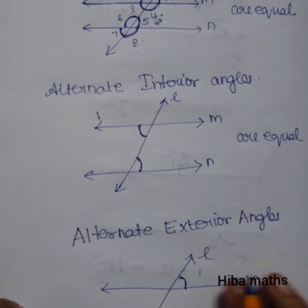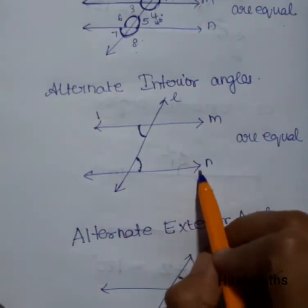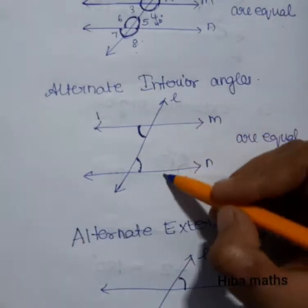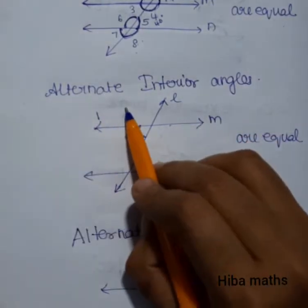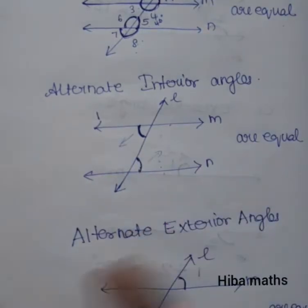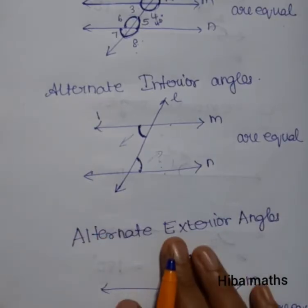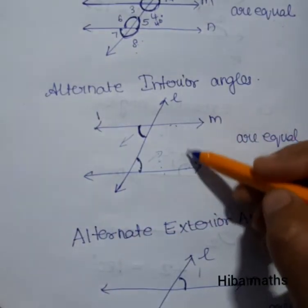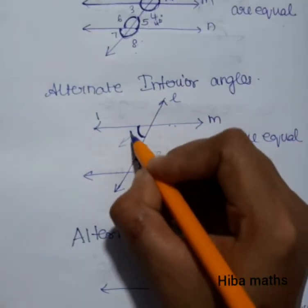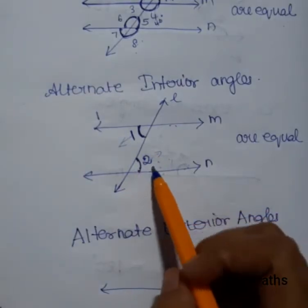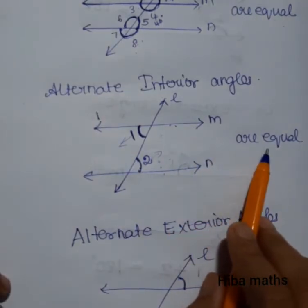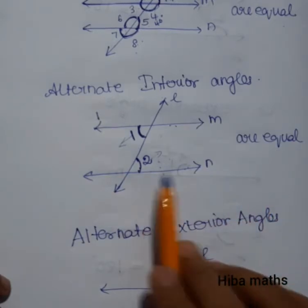Next, we will see alternate interior angles. We have two parallel lines crossed by a transversal. Interior means the inside, between the two parallel lines. Alternate means the opposite direction — one angle is on one side, the other is on the opposite side. Corresponding angles are on the same side, but alternate angles are on opposite sides. Alternate interior angles are equal.